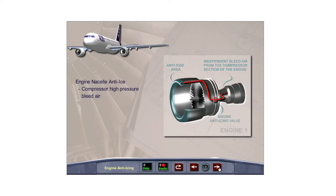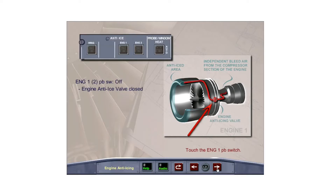Independent bleed air from the high-pressure compressor is used to anti-ice each engine nacelle. The bleed air is supplied through a two-position valve, one for each engine. The valves are controlled by the Engine 1 and Engine 2 push-button switches on the anti-ice panel. When the Engine 1 or 2 push-button switch is in its OFF position, the respective valve closes.